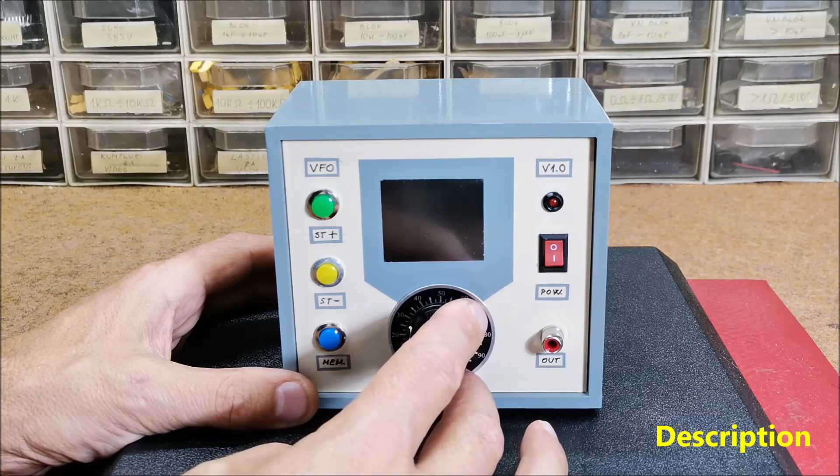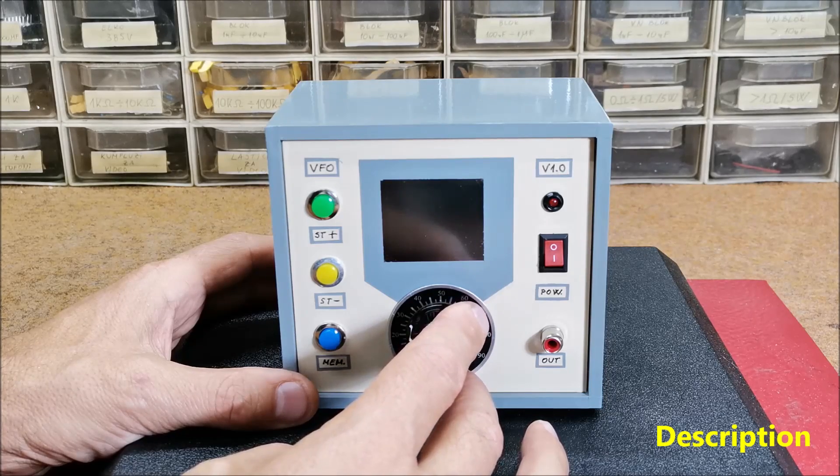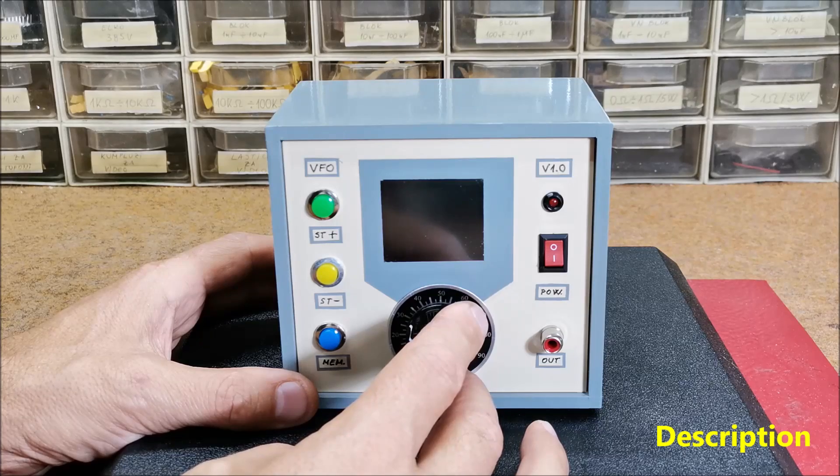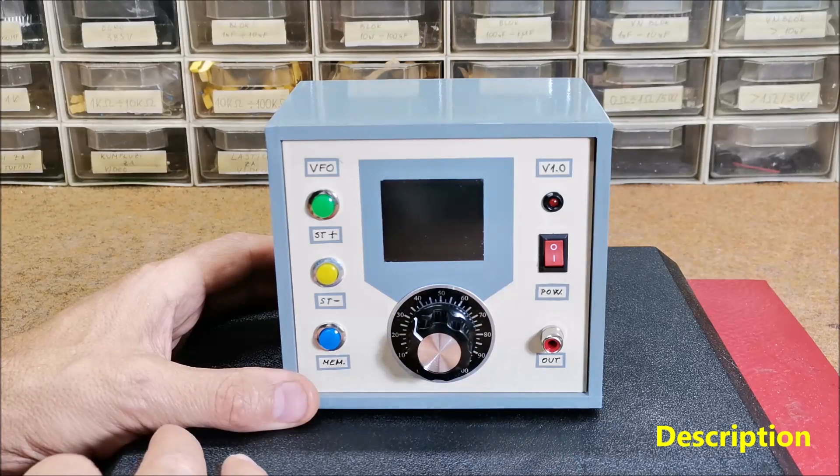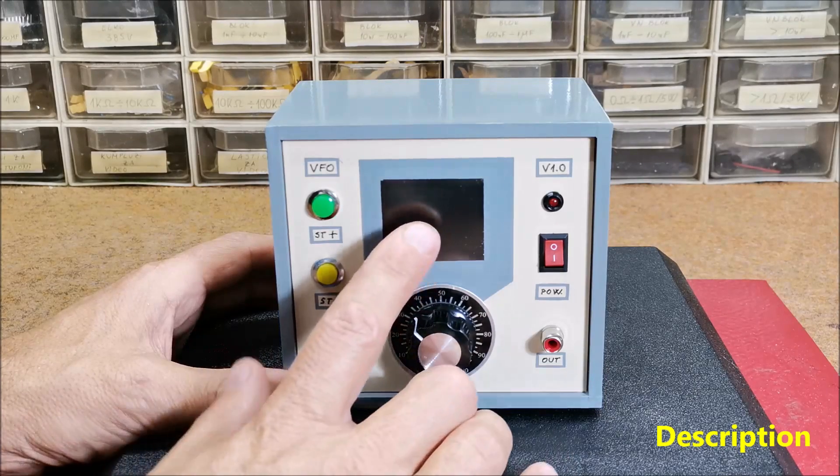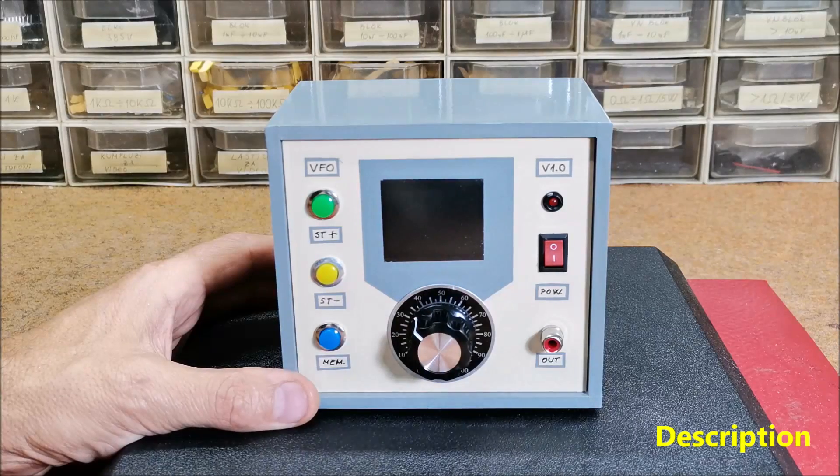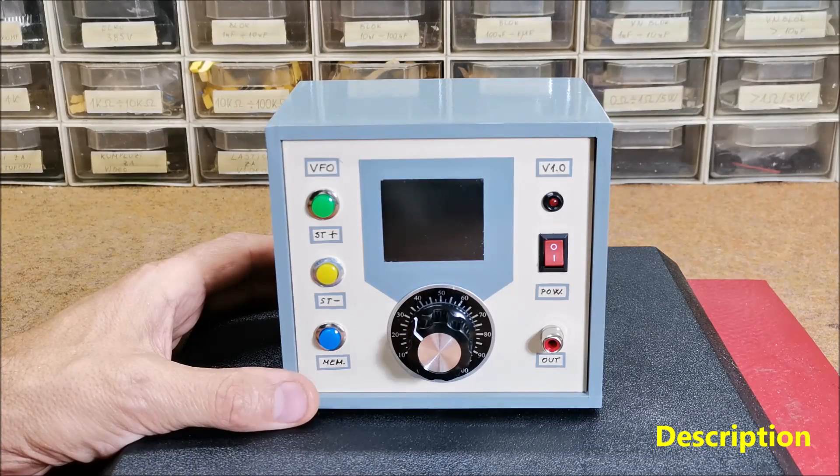This time I will show you how to make a VFO that covers the range from 100 kHz to 160 MHz and uses a minimum number of components. The selected frequency is displayed on a beautifully designed retro scale in the style of ham radios from the previous century.